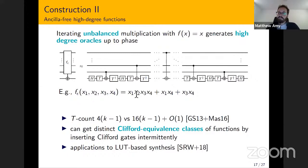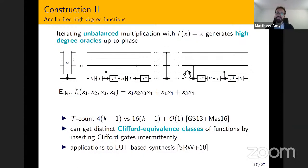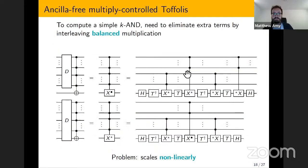We came up with a construction that we think is interesting anyway, because it allows us to generate a degree-K oracle with 4(K−1) T gates. The best known previously would be a K-control Toffoli gate without ancillas, which would take 16(K−1) T gates. It's also interesting because you can get distinct classes of functions that are Clifford-equivalent, which gives applications to lookup-table-based reversible circuit synthesis. We found a couple of instances where it actually improves over the state of the art for specific classes of functions.